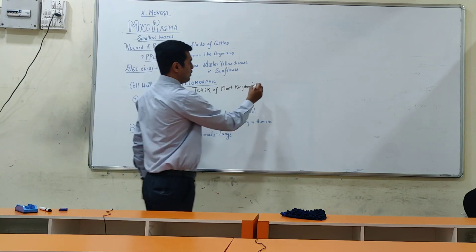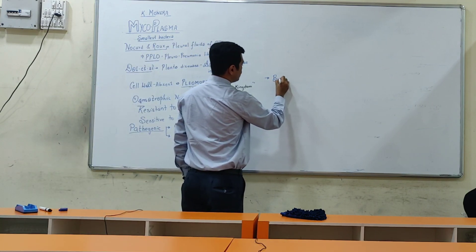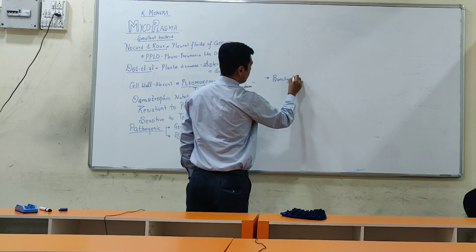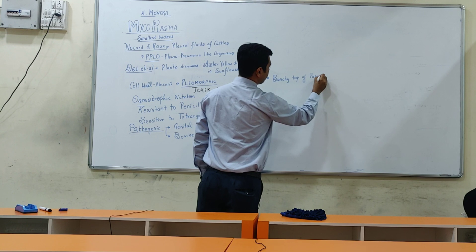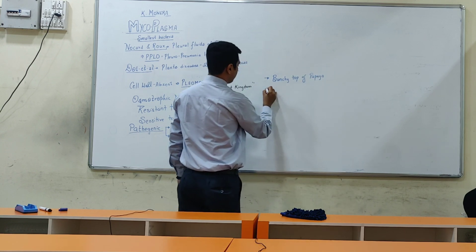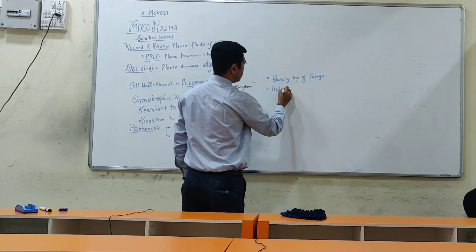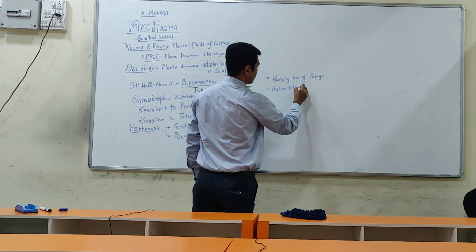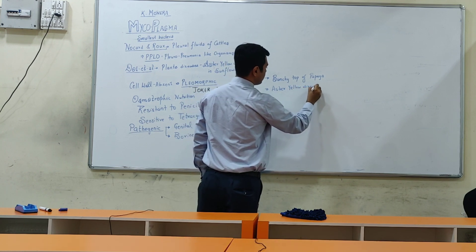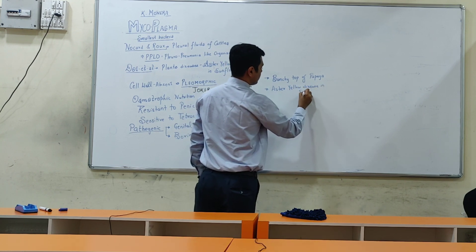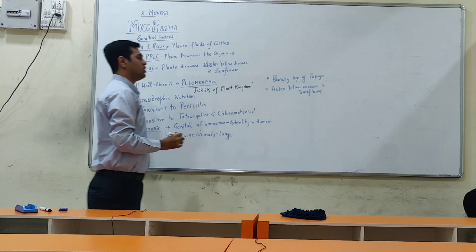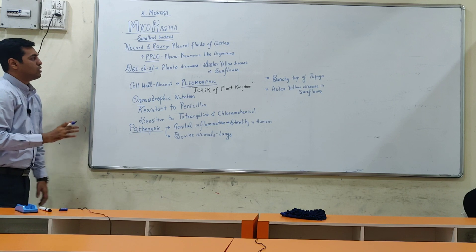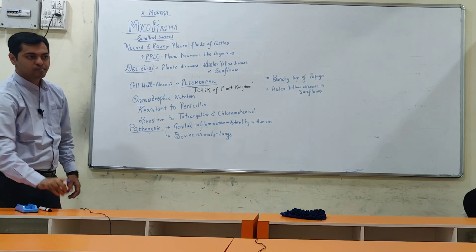They also cause infection in plants. In plants, they cause infections like bunchy top disease and aster yellow disease in sunflower. So these are pathogenic organisms. This covers the unique characteristics of Mycoplasma.